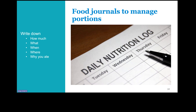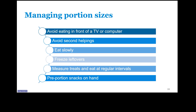If you're struggling to manage your portions, you can use a food journal as a tool. It doesn't have to be anything fancy — just somewhere you can write down how much you ate, what you ate, when you ate, where you ate, and why you ate. If you notice that you tend to eat too much when you're not hungry, such as out of boredom, try to do something else like going for a walk, cleaning, or simply taking a drink of water. You can also avoid eating in front of the TV or computer, avoid second helpings, eat slowly, freeze your leftovers, measure treats, eat at regular intervals, and keep pre-portioned snacks on hand.